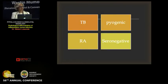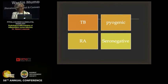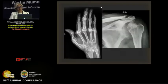When we talk of infective, we are mainly talking of tuberculosis or pyogenic. Inflammatory — we are mainly talking of rheumatoid arthritis and seronegative arthritis. Obviously there are many more: you have fungal, you have Madura infection, you have other inflammatory conditions like gout and all, but we'll just look at these.